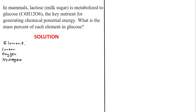To find the mass percentage of each element, you first need to find the amount of each element in one molecule of glucose, then find the mass of each element per mole of the compound. The moles of each element equal the subscript in the formula. Then you find the mass fraction and finally the mass percentage.